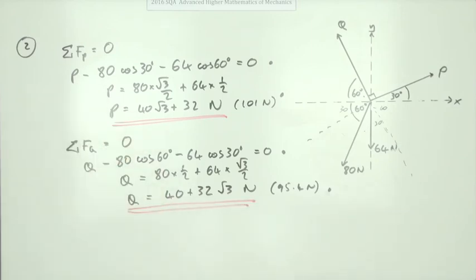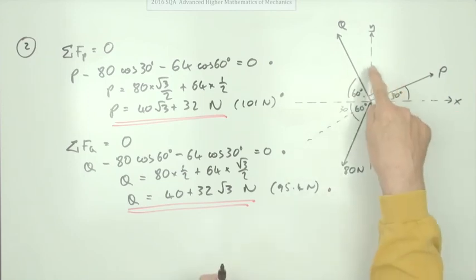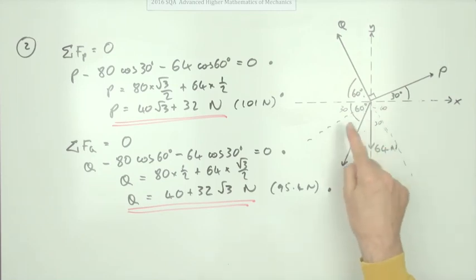It was easier getting the four marks that way. And I would have assumed that that's the way the question was designed. Because they were perpendicular to each other. You just had that little bit of footeriness trying to figure out these angles. But that only took a little bit of thought.